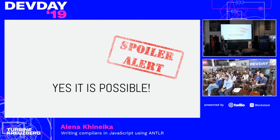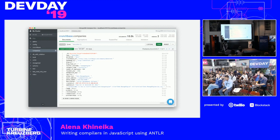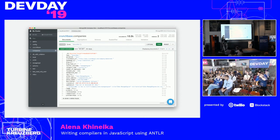In my company, we wanted to solve exactly the same problem. My name is Alena, and I'm a full-stack engineer at MongoDB. My team is working on the Compass project — it is a graphical interface for our database. Compass allows users to explore their databases and documents, write queries, create new entries and indexes, validate schemas, and much more.